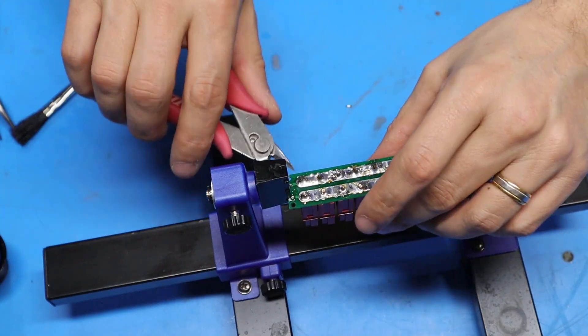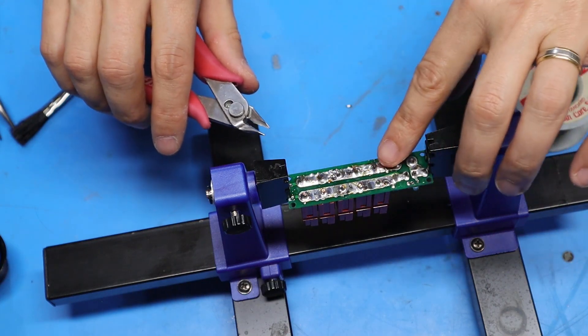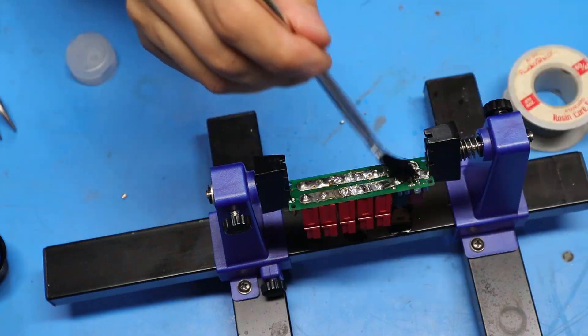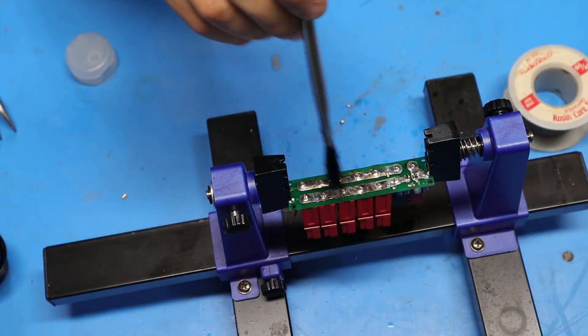I've got everything all soldered up here. What I'm going to do now is cut all the excess length off of these wires. Now we'll clean up all the excess flux with some IPA.